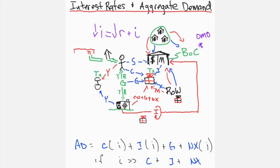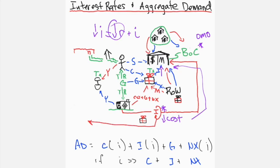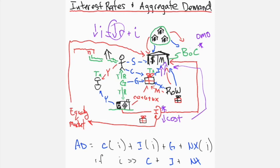Regarding investment expenditure, as real rates fall, the investment expense of borrowing decreases, leading to increased investment. Equally, as rates decrease, stocks become more favorable than bonds as a means to increase wealth. This increase in stock prices raises the likelihood of capital financing through stock issuance, and increased capital financing leads to increased investment expenditure. Finally, as real rates fall, the real cost of carrying a home mortgage falls, leading to increases in investment in new housing.